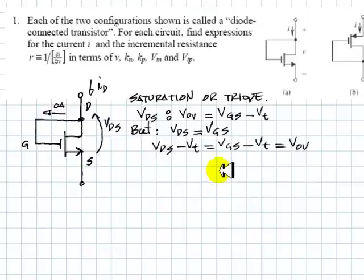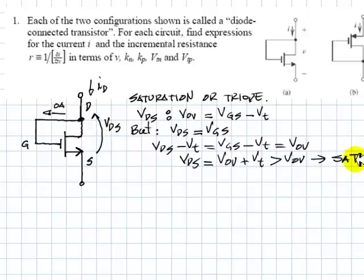That's right. But then, that means that VDS, this one, is V overdrive plus VT, which is a positive value for the N-channel transistor, and that is more than VOV. So that means the transistor is indeed in saturation.